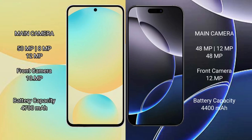Samsung Galaxy S24 FE has a triple camera setup: 50MP plus 8MP plus 12MP, and a front camera of 10MP. iPhone 16 Pro Max comes with a triple camera setup: 48MP plus 12MP plus 48MP, and a front camera of 12MP.